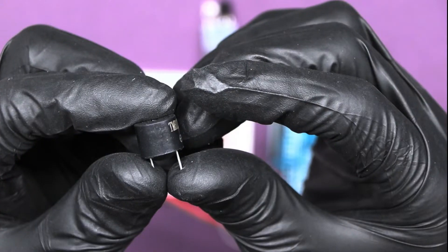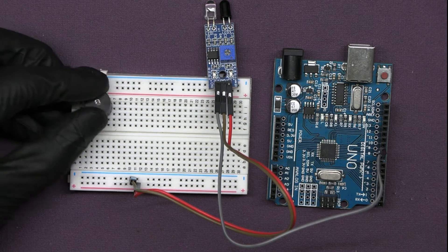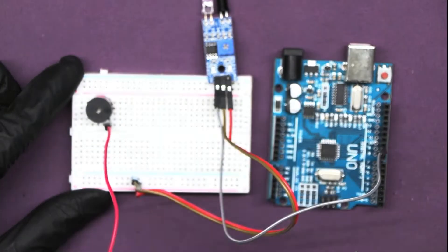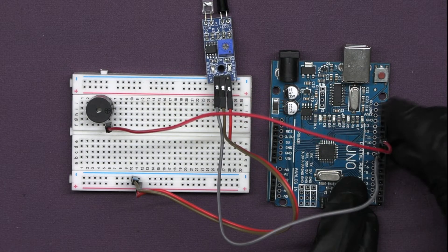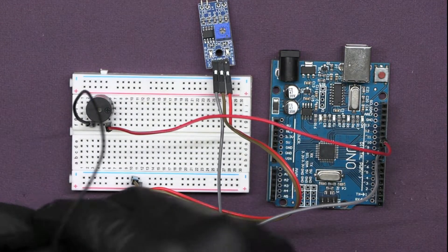Now, insert the buzzer in the breadboard. And connect the positive terminal of the buzzer to any digital pin of the Arduino like pin number 11. And the negative terminal to the ground bus of the breadboard.